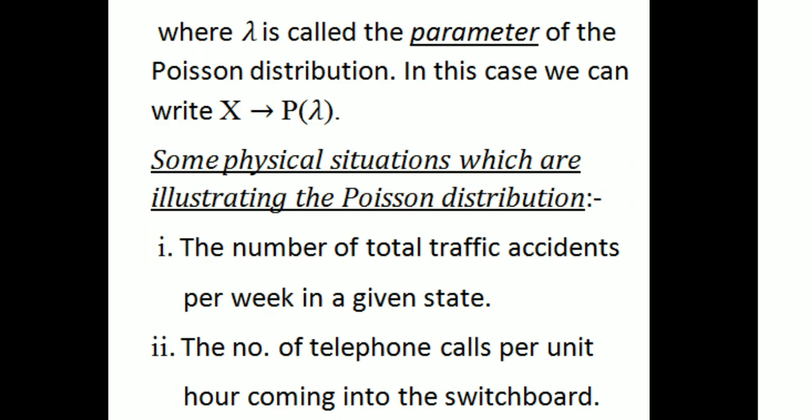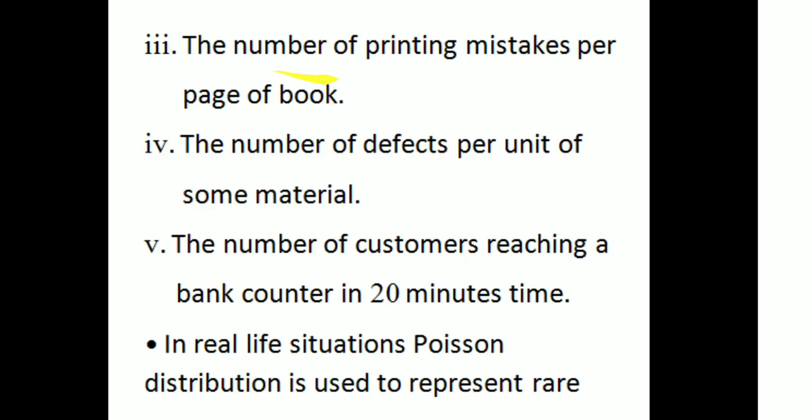Some physical situations which illustrate the Poisson Distribution: first, the number of total traffic accidents per week in a given state; second, the number of telephone calls per unit hour coming into the switchboard; third, the number of printing mistakes per page of a book; fourth, the number of defects per unit of some material; and the number of customers reaching a bank counter in 20 minutes.